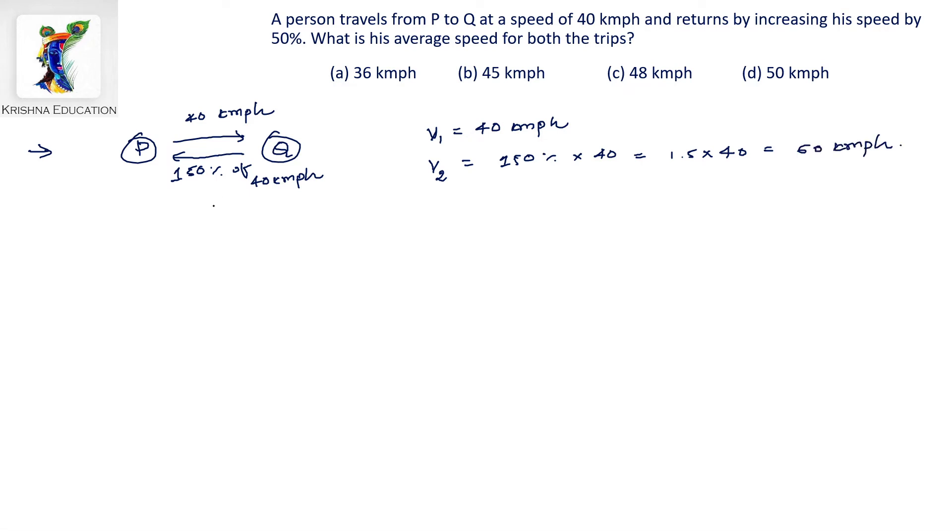If we have a shortcut formula, that average speed V is equal to 2 multiplied by V1 multiplied by V2 divided by V1 plus V2.